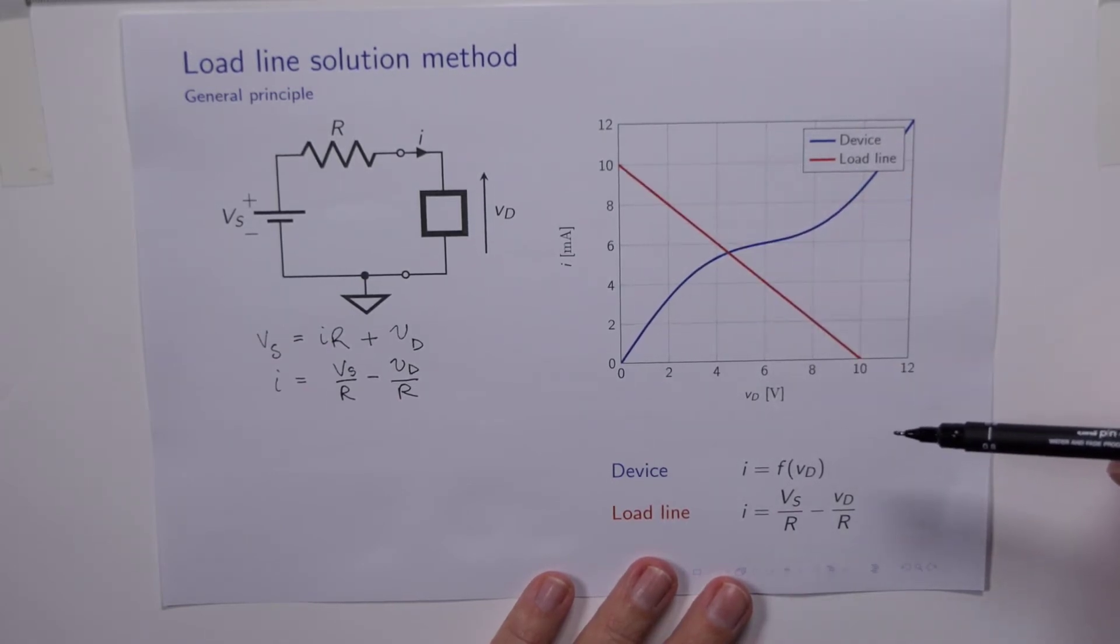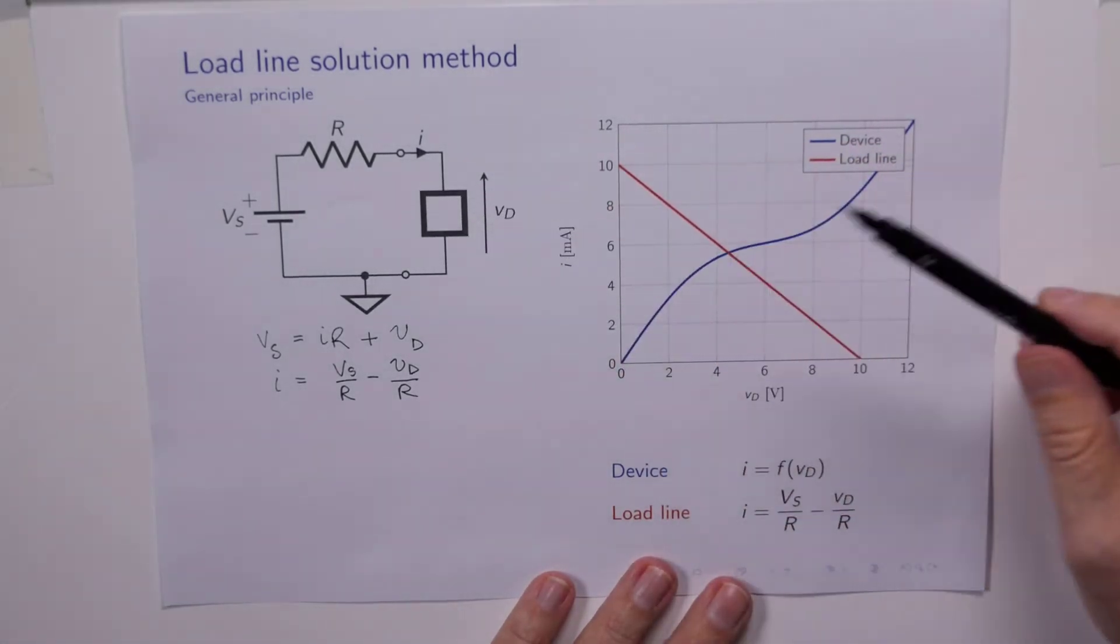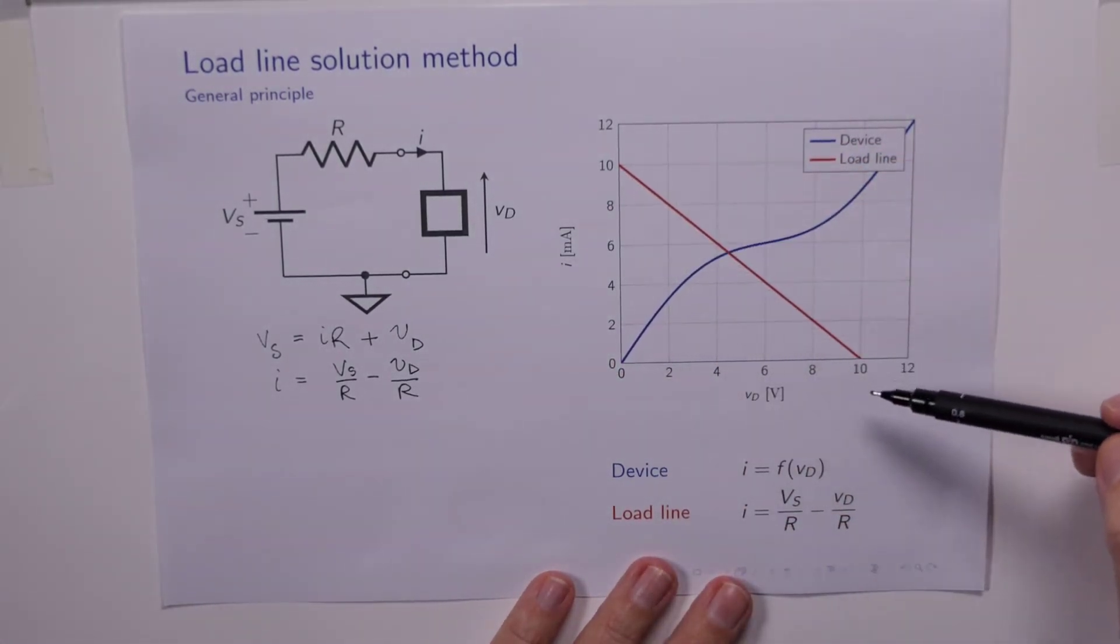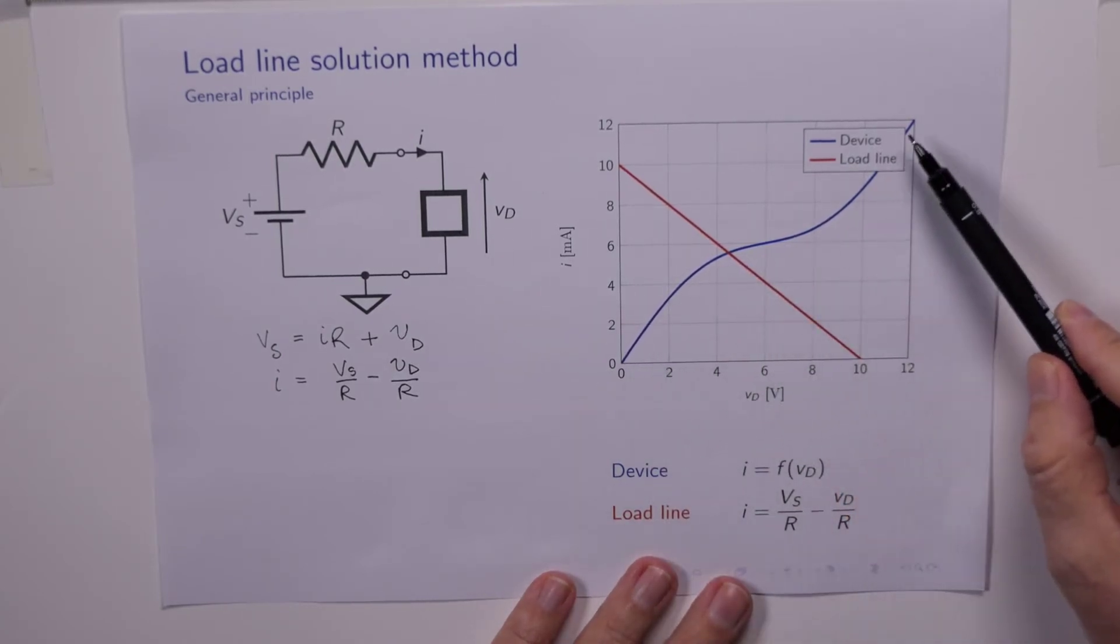So Kirchhoff's voltage law, which applies to the circuit, has provided the red line. The device manufacturer has provided the device curve, and that's the blue line.